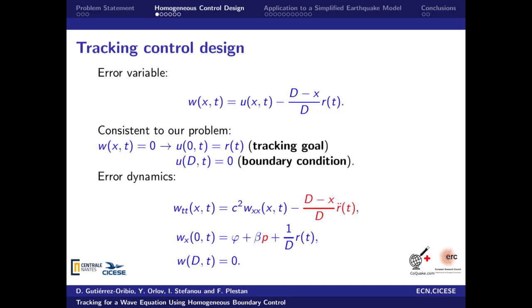The first step in the control design is to introduce an error variable. Note how such an error is consistent with our tracking problem when it takes a value of 0, and also with the boundary condition at x equal to d. The error dynamics is then obtained where a new perturbation term appears on the wave equation due to the reference signal.